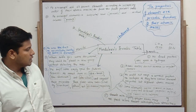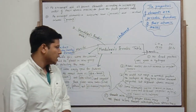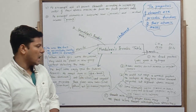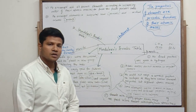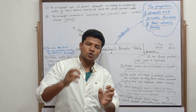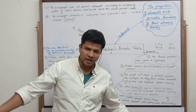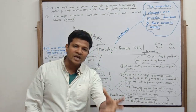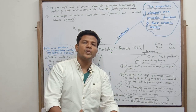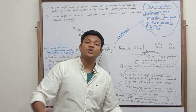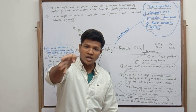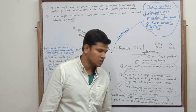Fourth problem: some elements placed in the same subgroup had very different properties. For example, manganese was placed along with halogens in the same subgroup, even though their properties were completely different. Two elements with different properties were placed in the same subgroup.